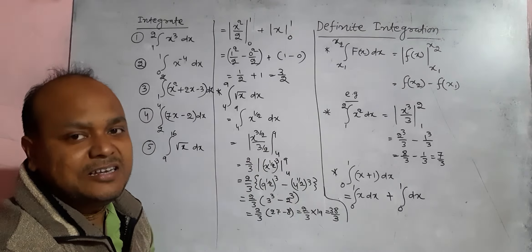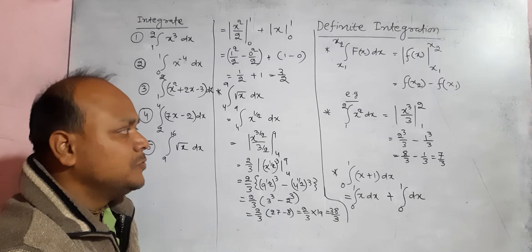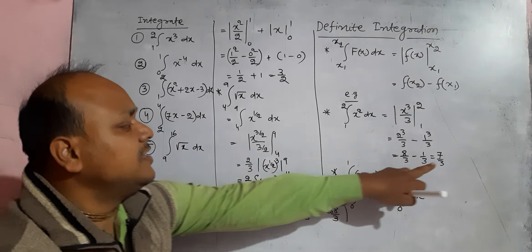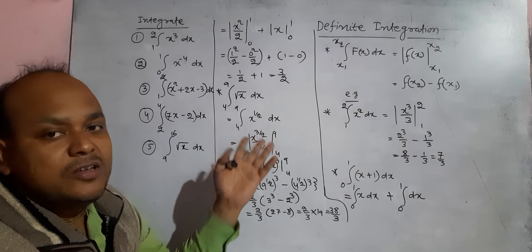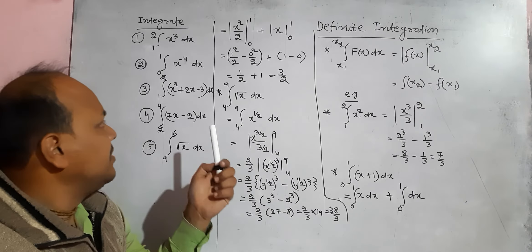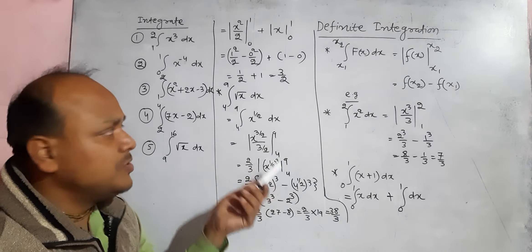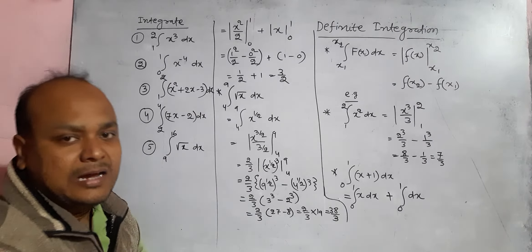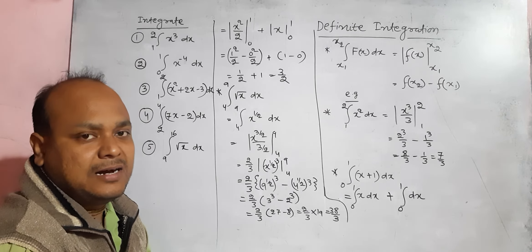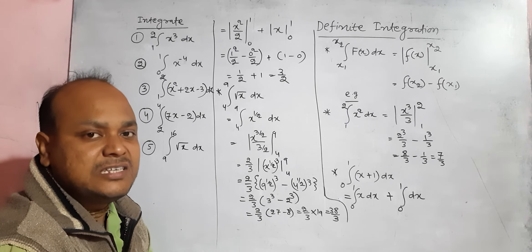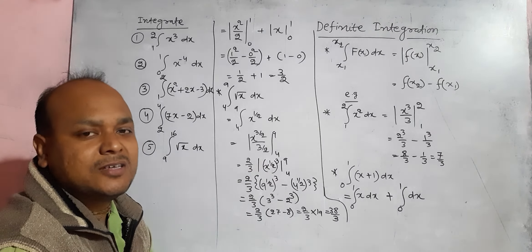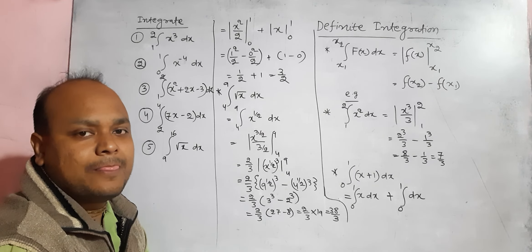So this is called definite integration, which is evaluated in terms of limits and the final answers are constants — there is no variable in the final answer. This is the end of mathematical notes for physics covering differentiation, integration, and definite integration. With the use of these tools, let us now enter into physics.